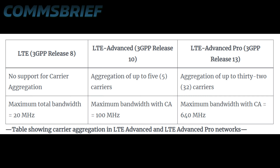LTE Advanced networks support carrier aggregation of up to five carriers, which means that if you use a 20 MHz channel, 20 times 5 equals 100, so you can have a maximum bandwidth of 100 MHz in LTE Advanced.